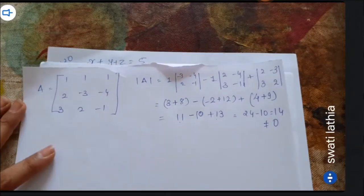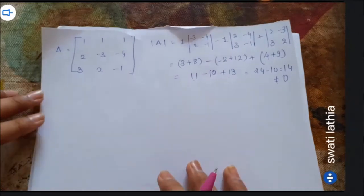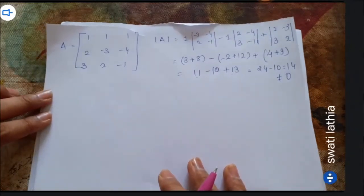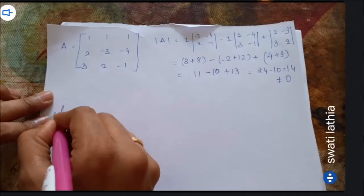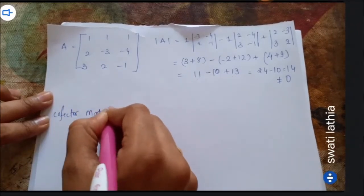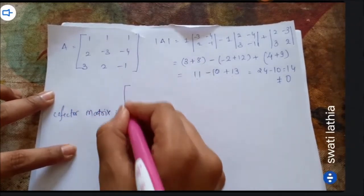Since the determinant is not equal to 0, A inverse exists. Now we find A inverse. Step 2: the co-factor matrix.